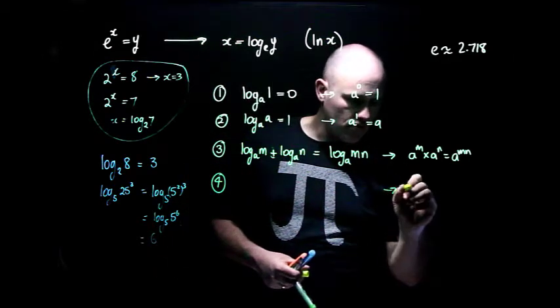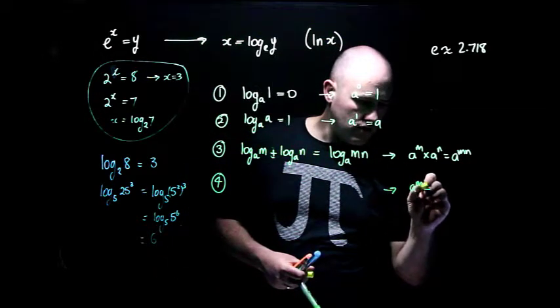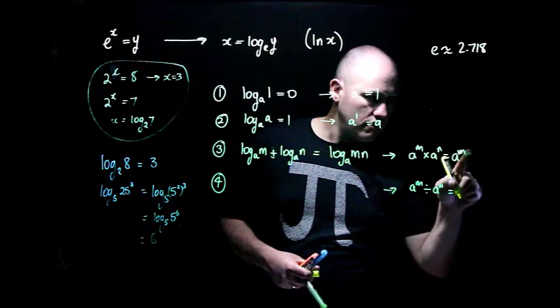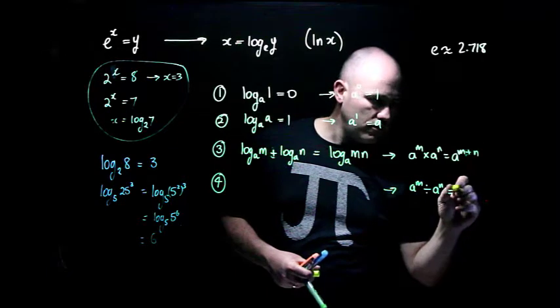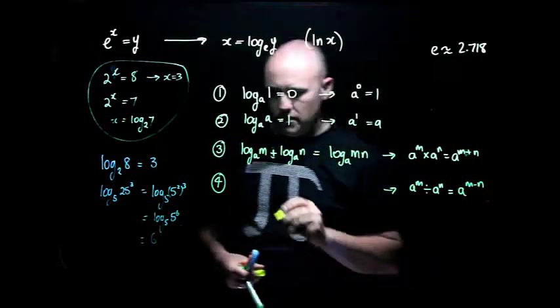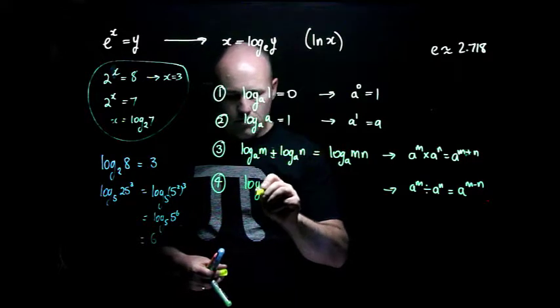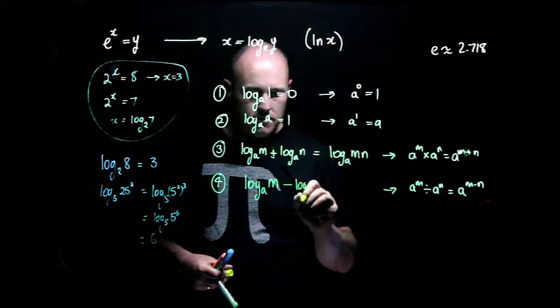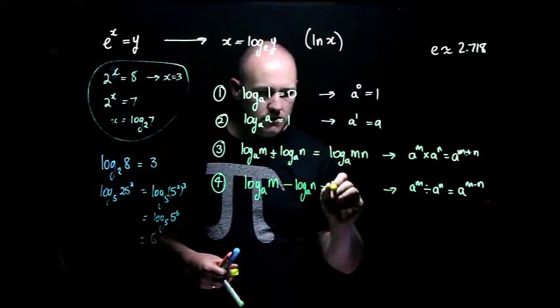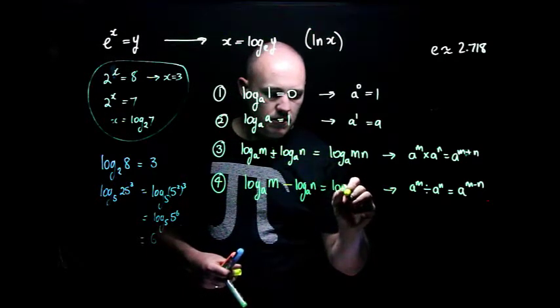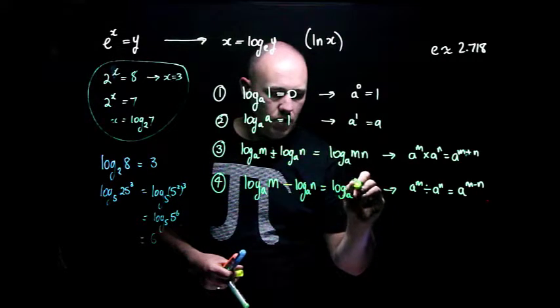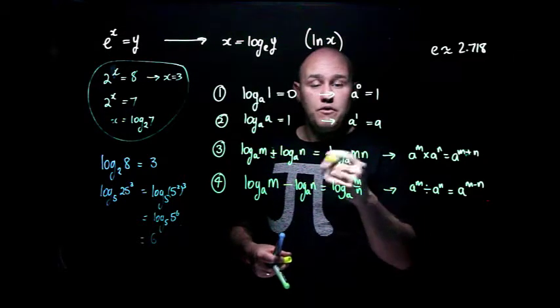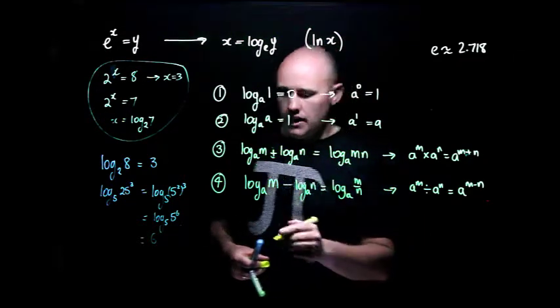We get one that's very similar. And actually, just to give you the heads up, it comes from this. a to the power of m divided by a to the power of n is equal to—sorry, that should be m plus n, my apologies—a to the power of m minus n. And this is what comes in the reverse. log base a of m minus log base a of n is equal to log base a of m over n. So if you subtract two logs with the same base, then you can divide the things inside the logs. That's 4.